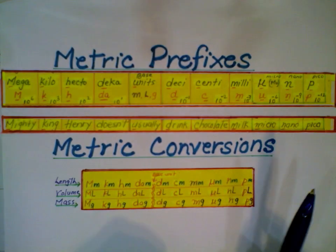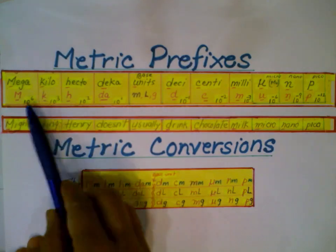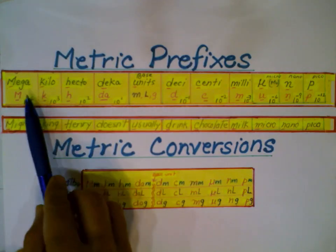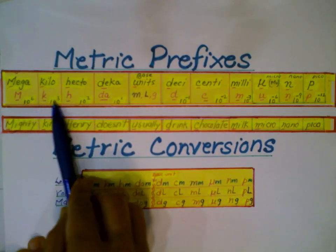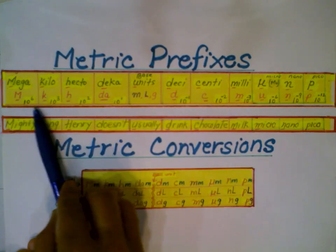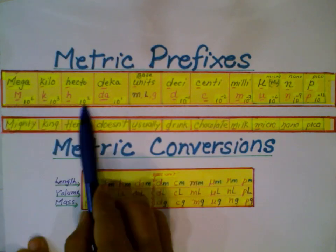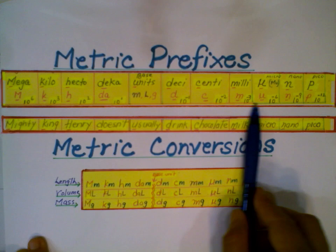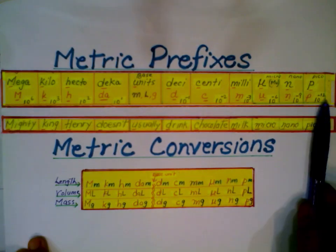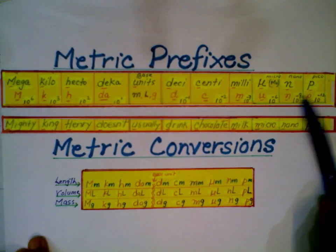Going from mega to pico — from left to right — the units are becoming smaller. If you go in the reverse direction, from right to left, they are becoming bigger and bigger.